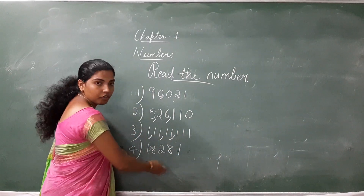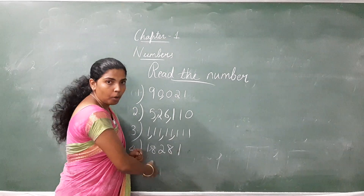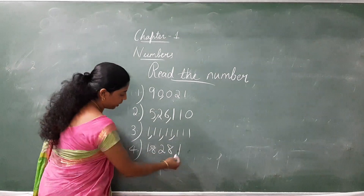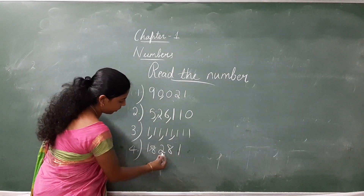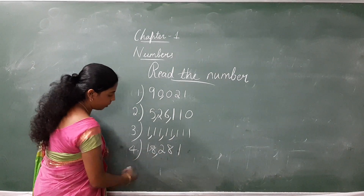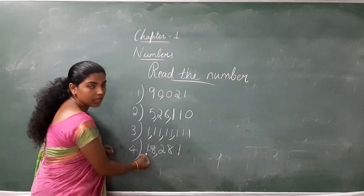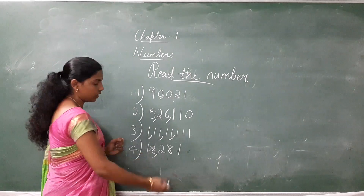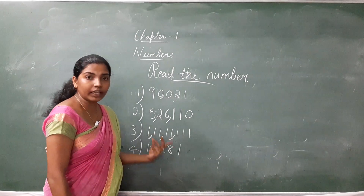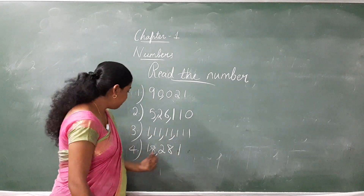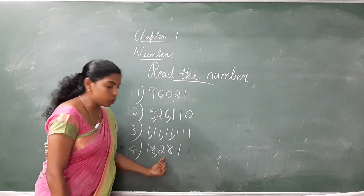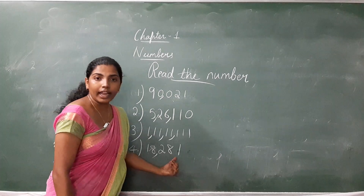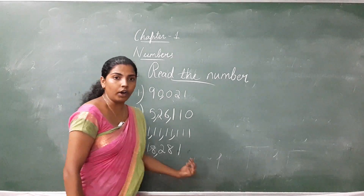Next question. First, we have to put a comma after each period: ones, tens, hundred — comma — thousand, ten thousand. So the number can be read as eighteen thousand, two hundred and eighty-one.